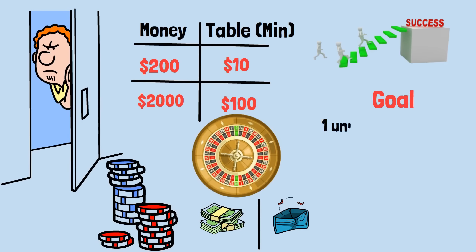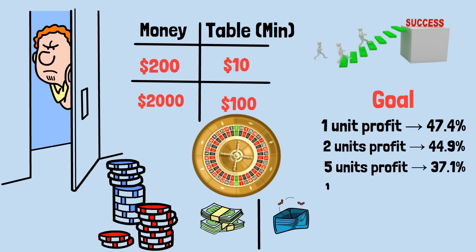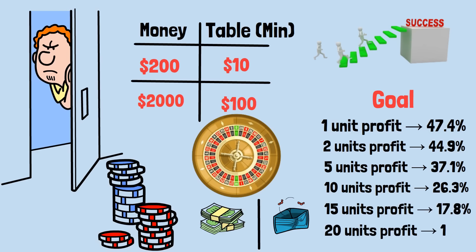Here's how your probability of success changes based on your profit target: Goal 1-unit profit: 47.4% chance of success. Goal 2-units profit: 44.9% chance. Goal 5-units profit: 37.1% chance. Goal 10-units profit: 26.3% chance. Goal 15-units profit: 17.8% chance. Goal 20-units profit: 11.1% chance of success.